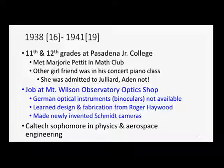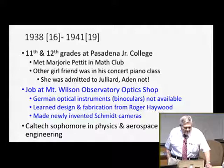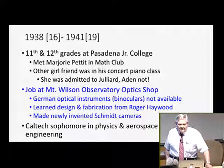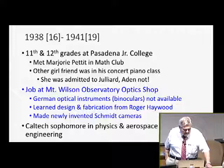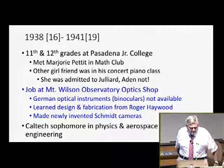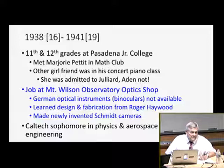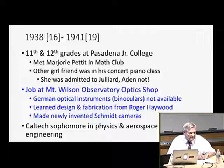In 1938, when he was 16 to 19, he was in the 11th and 12th grades at Pasadena Junior College. He met Marjorie Pettit in the math club. His other girlfriend was in his concert piano class — he really liked her, but she was admitted to Juilliard and Aidan was not, so they went their different ways, and Aidan wound up marrying Marjorie. At the time he had a job at the Mount Wilson optical shop. In 1938–40, getting optical instruments from Germany was very hard, and the American optical industry was not able to provide the army with binoculars, telescopes, and range finders, so these were being manufactured at the Mount Wilson Observatory optical shop.